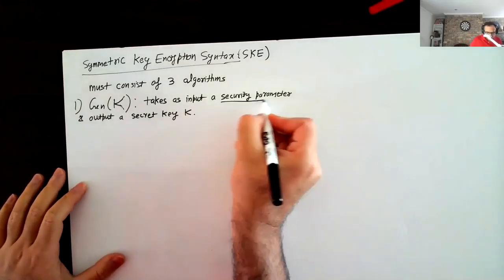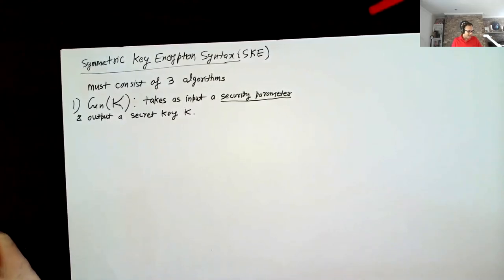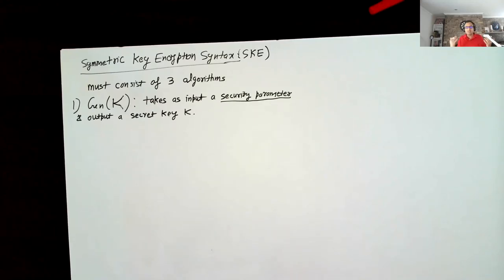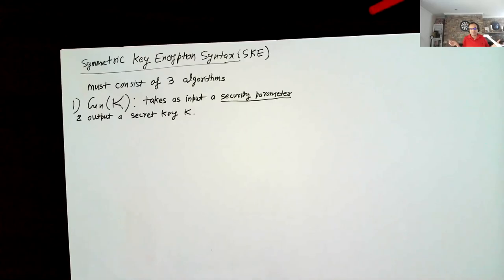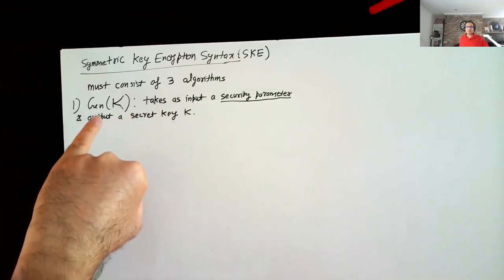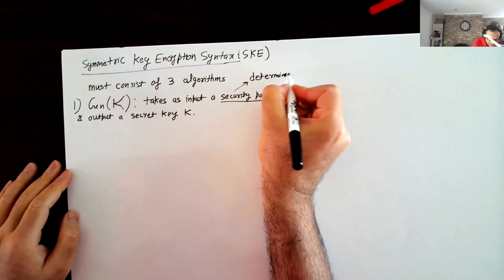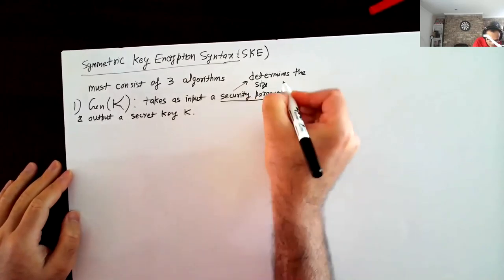What is a security parameter? This is something you will see all the time in cryptography. The security parameter determines the length of the key. If you choose a 100-bit key, it might give you some security — the adversary can guess your key with probability 2 to the power minus 100. Maybe you want 2 to the power minus 1000, so you set kappa to be bigger and the key generation algorithm will output a much longer key. So the security parameter determines the size of the key.